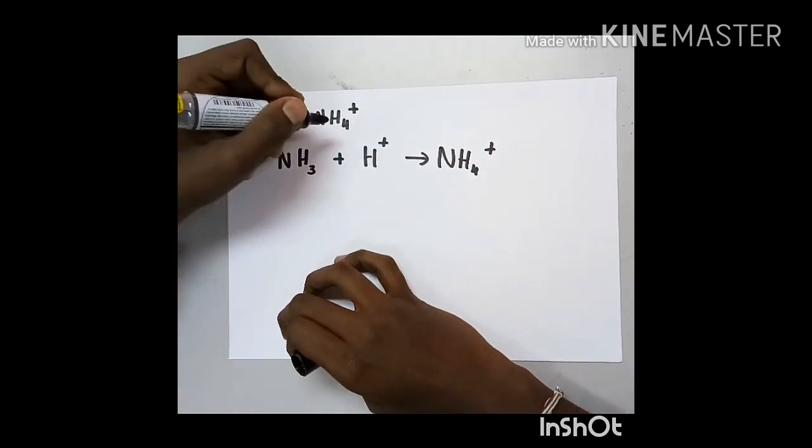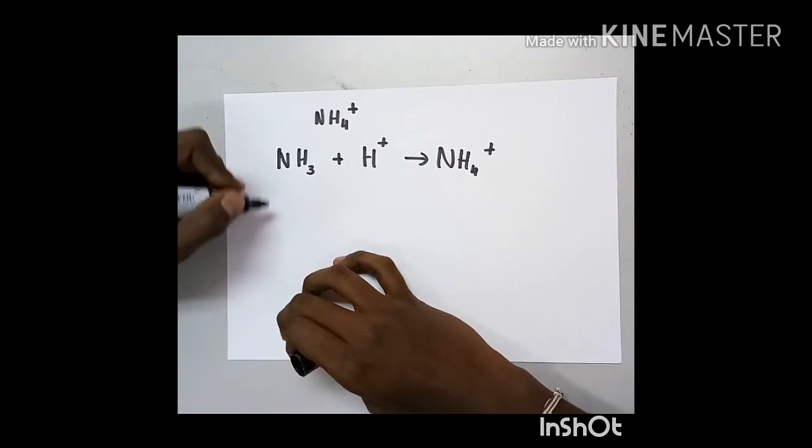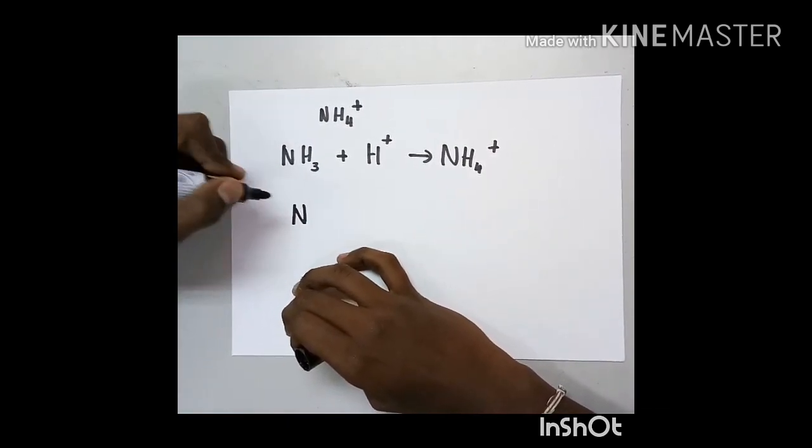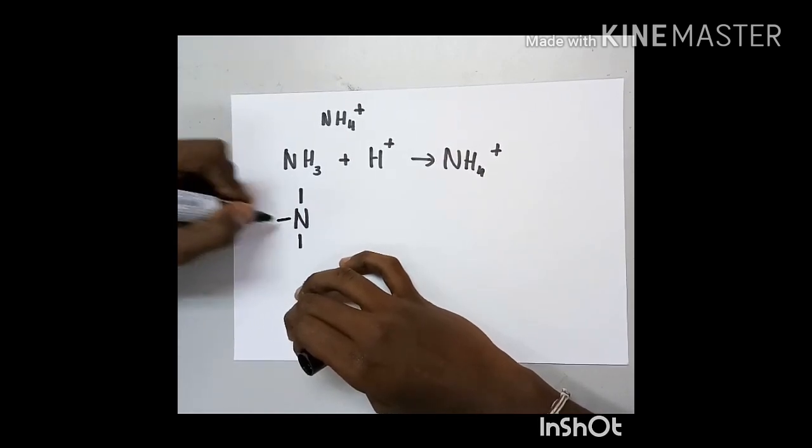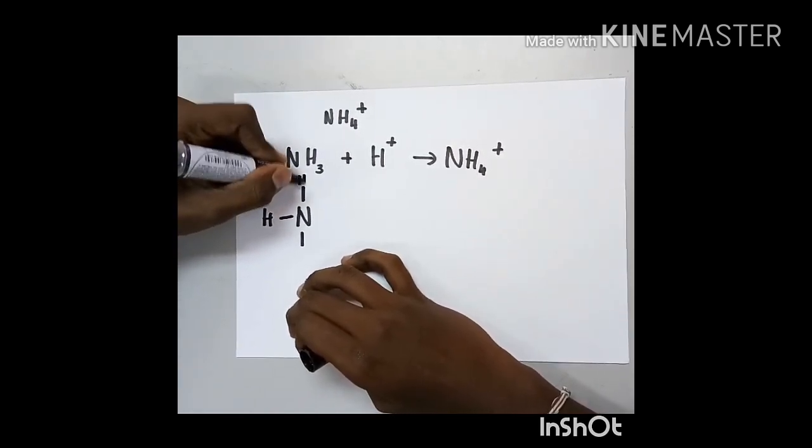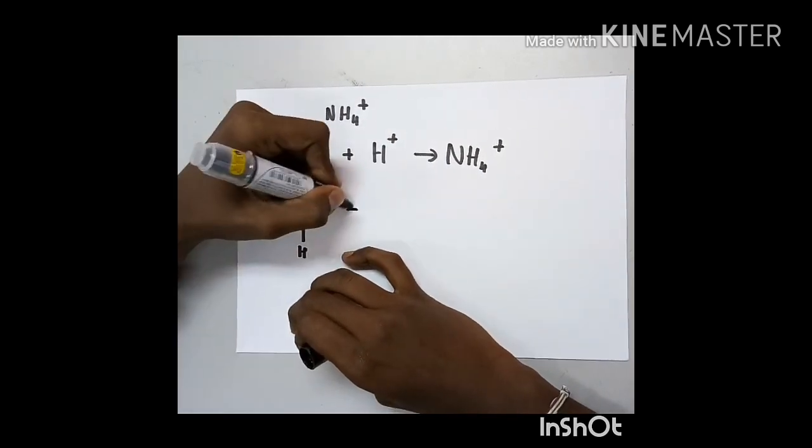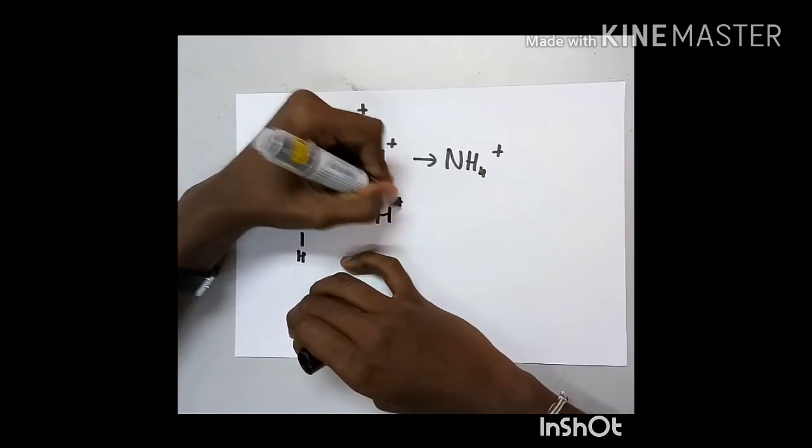So, when we want to draw the dative bond, we must draw the Lewis structure for the ammonia. The Lewis structure for ammonia consists of three hydrogen atoms and one lone pair. Then, last will be the hydrogen ion.